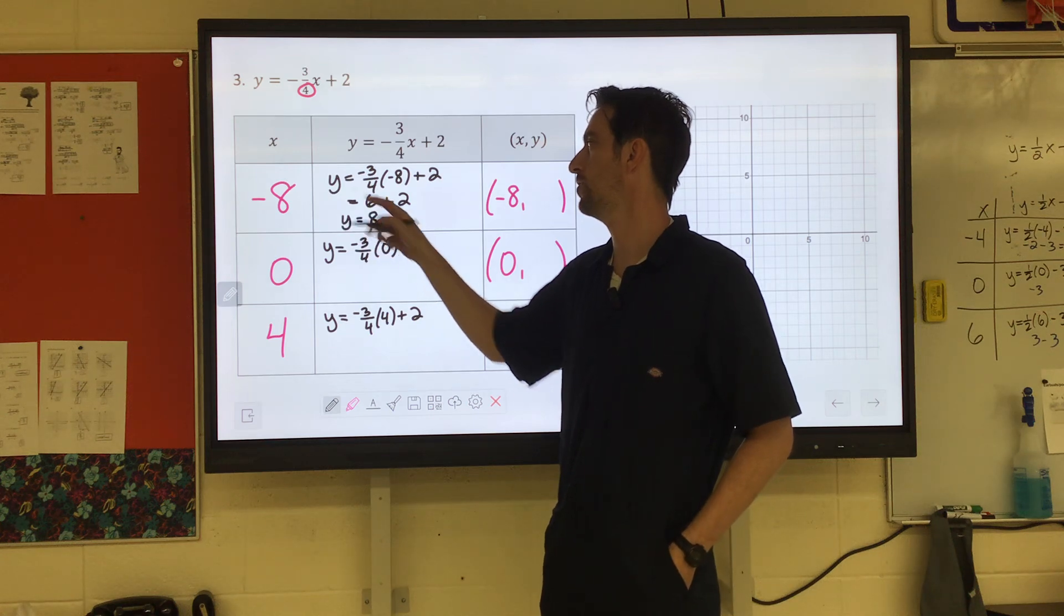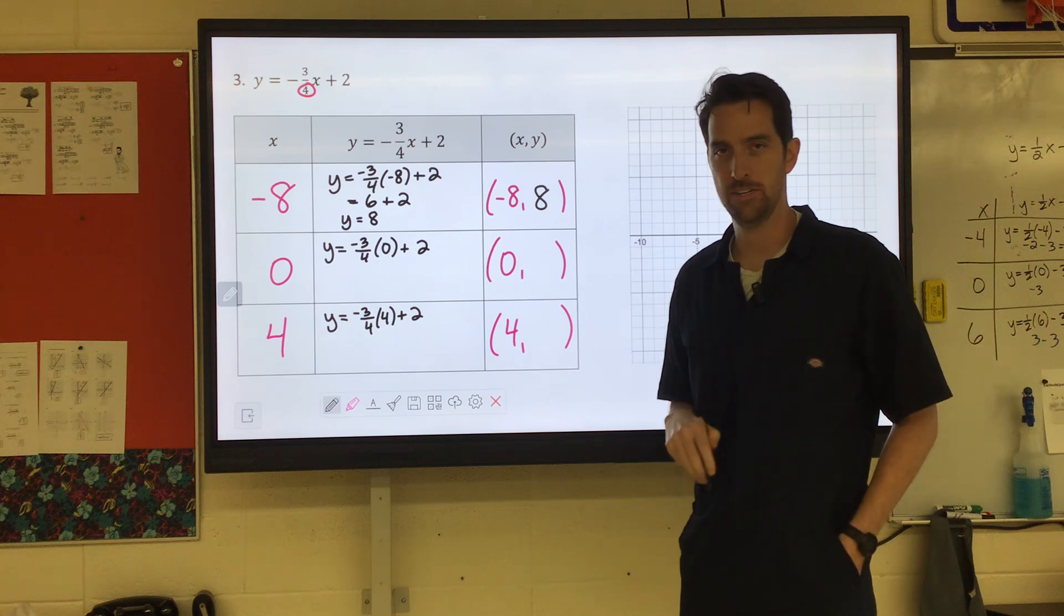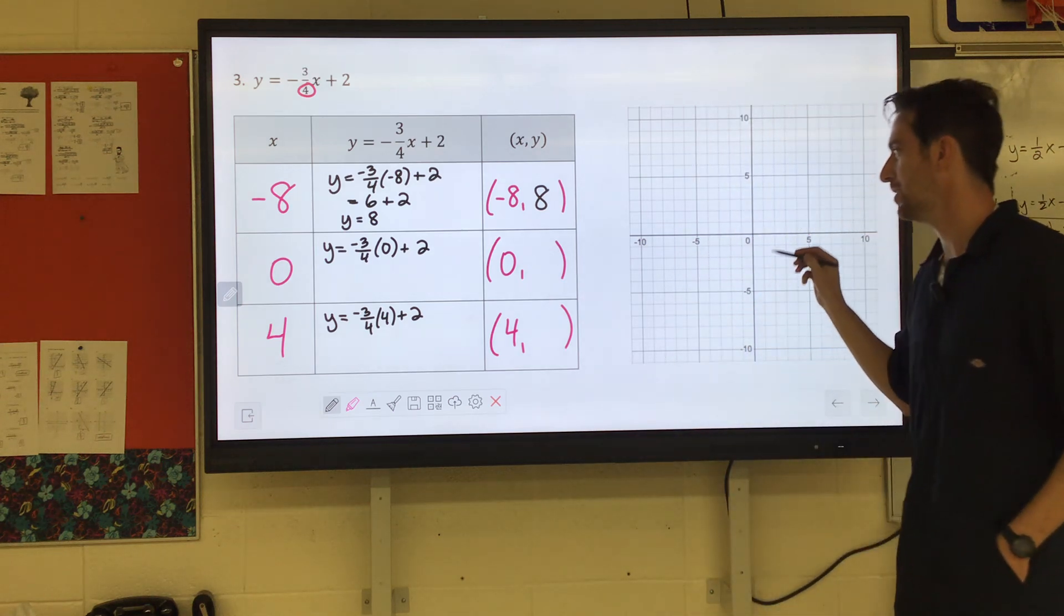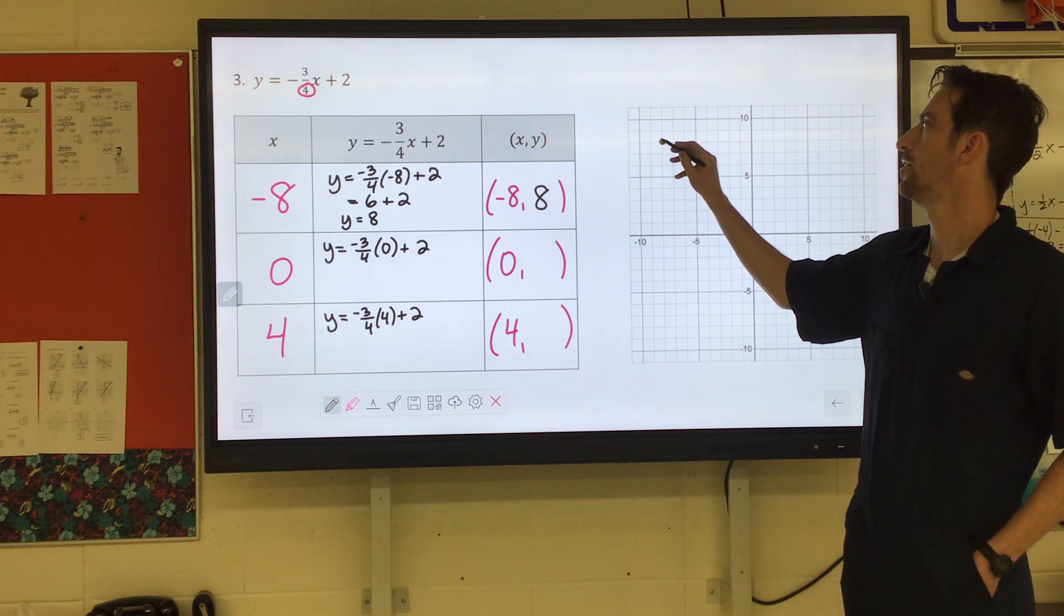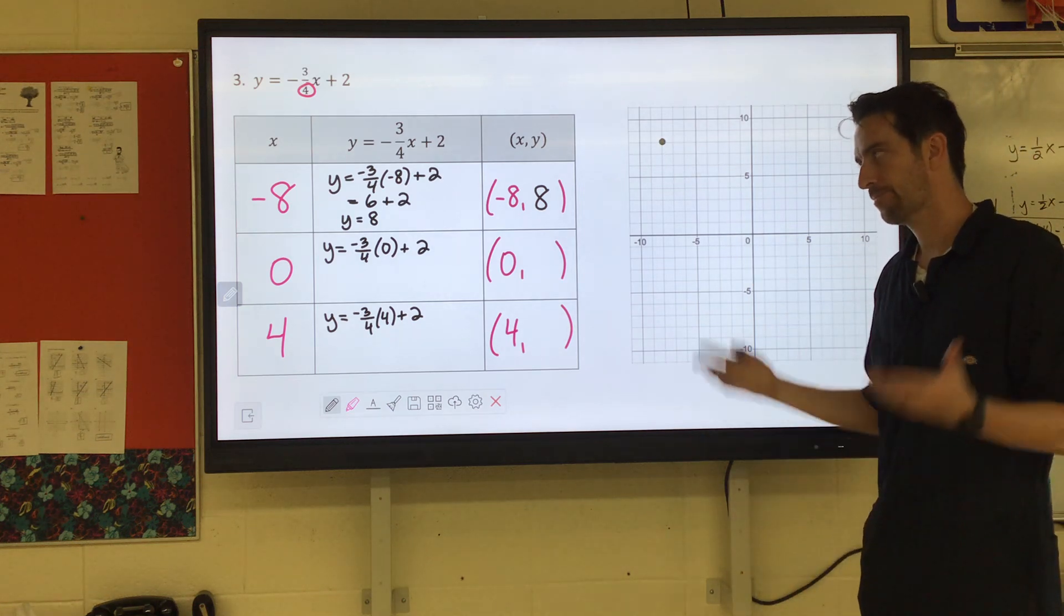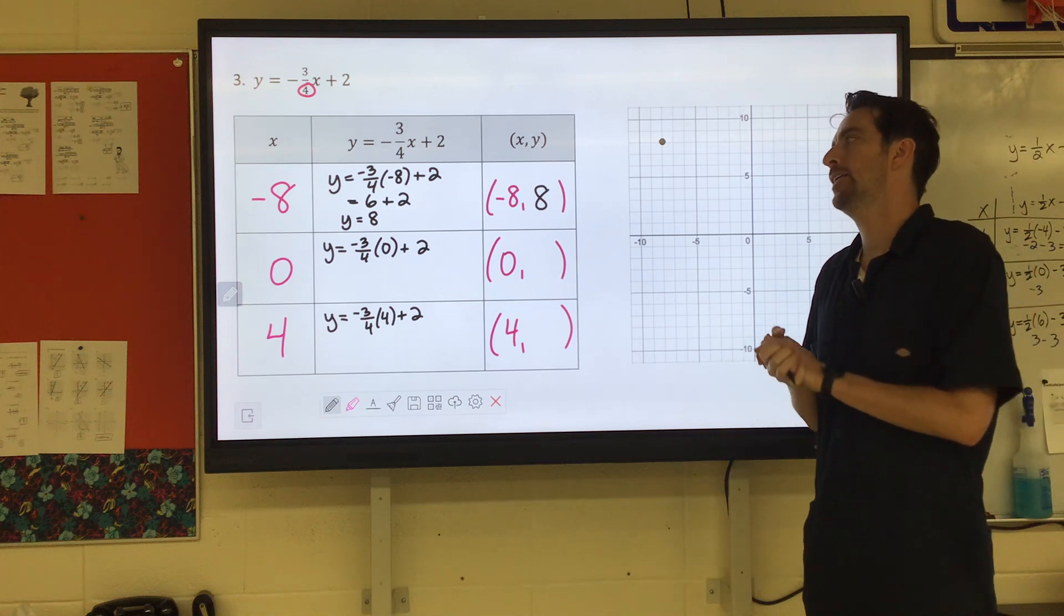So when we substituted in negative eight for x, we got out positive eight. So go ahead and plot that point. That's eight to the left and then up eight. There's our first point.